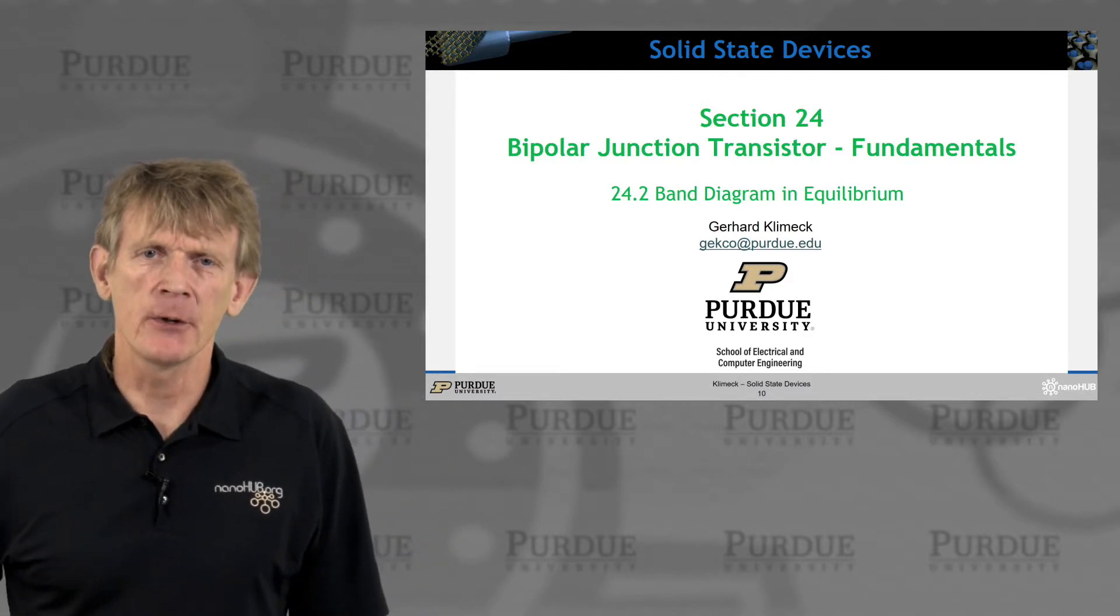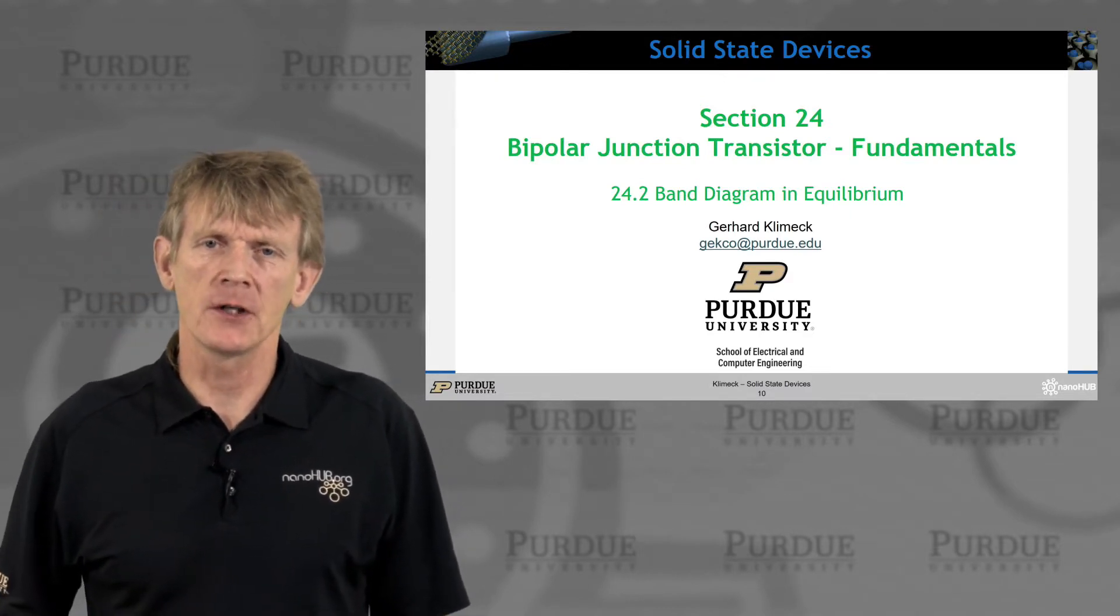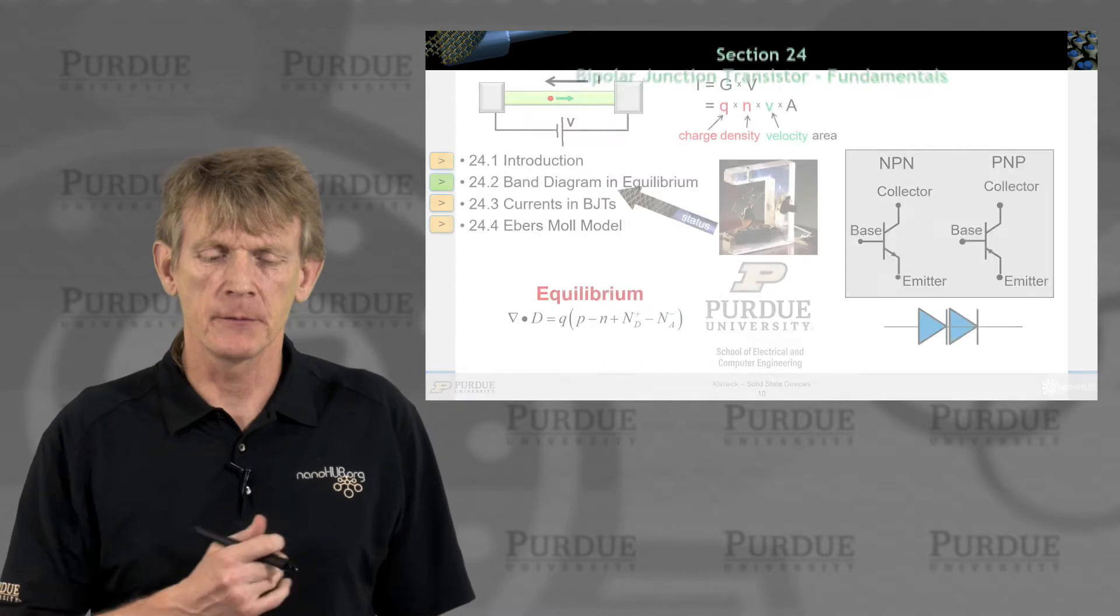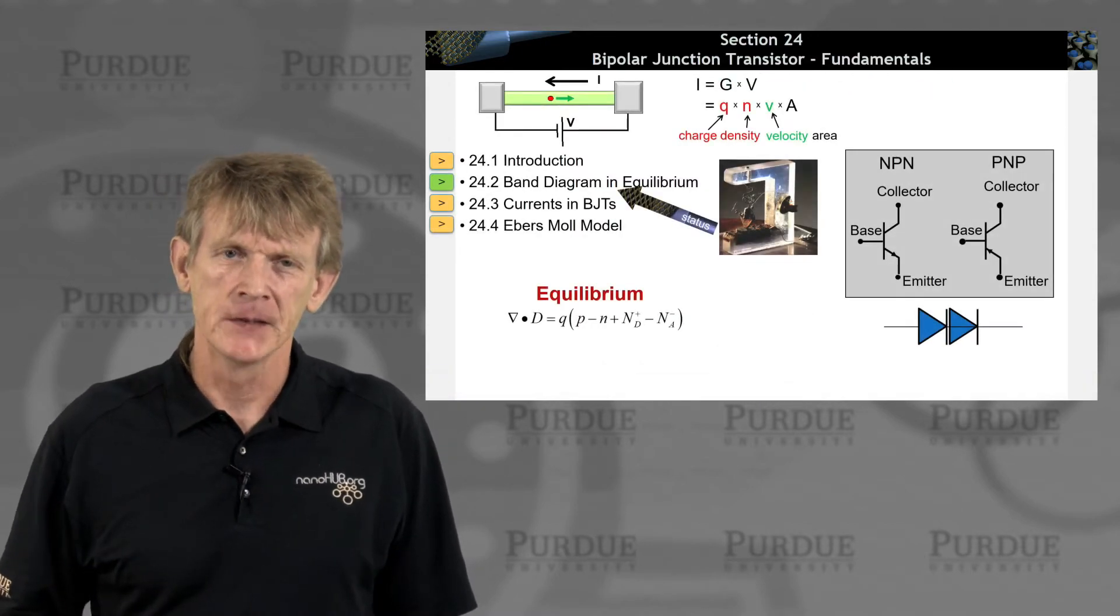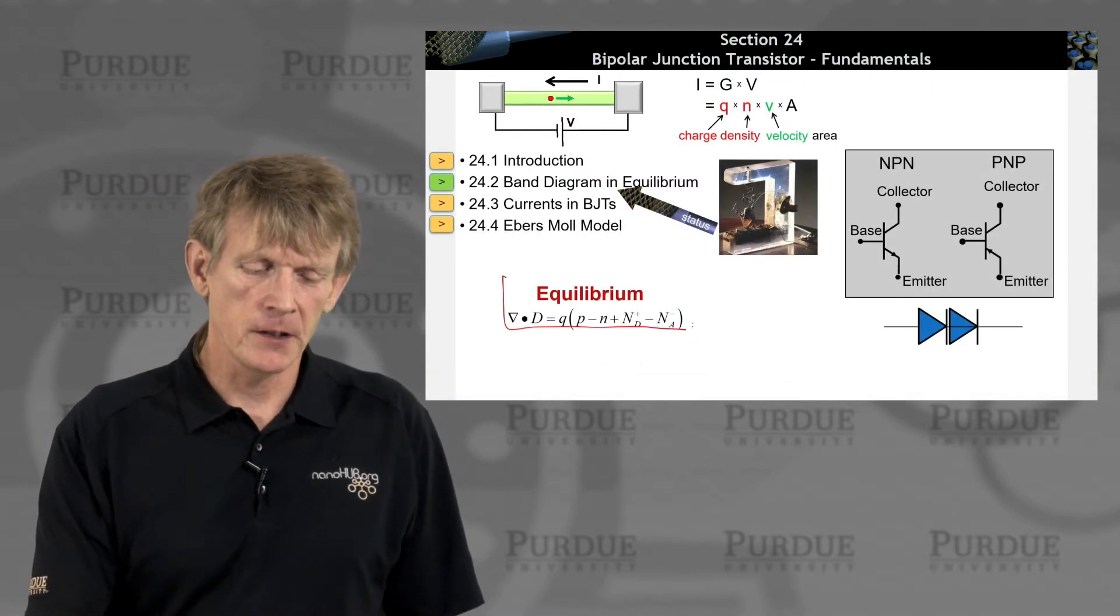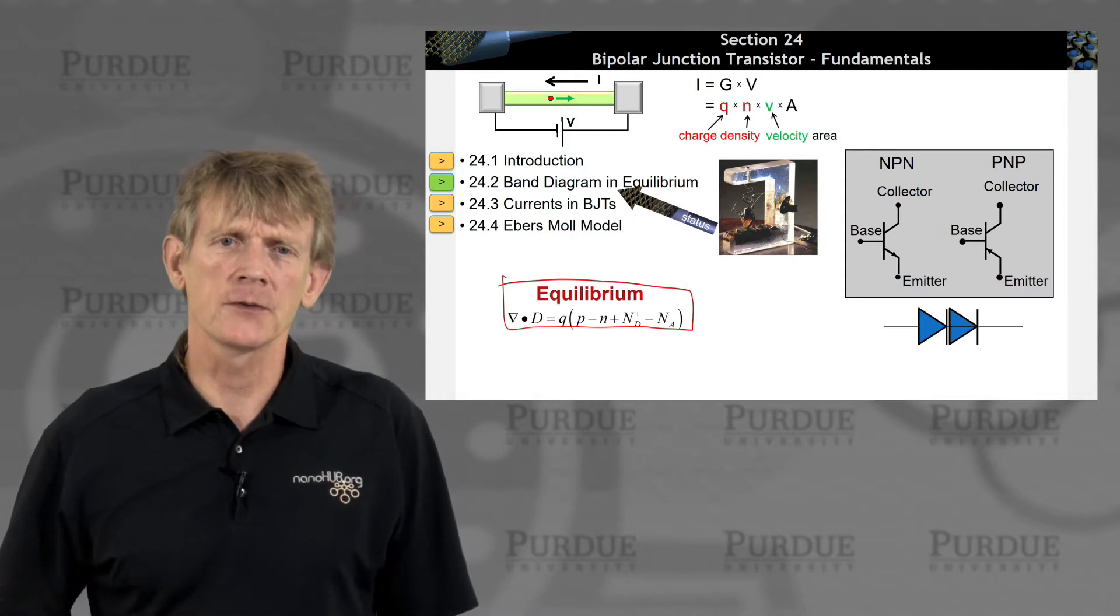All right, so here we go. Let's draw some band diagrams in equilibrium for bipolar junction transistor. Of course, we start out with the Poisson equation, or Gauss's law, if you will.